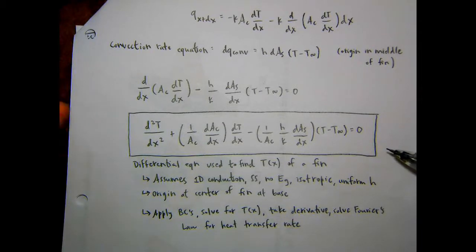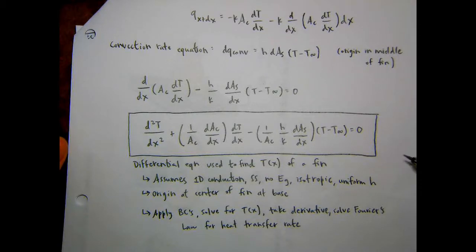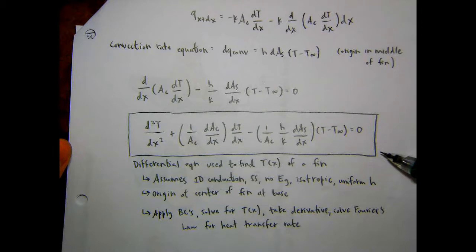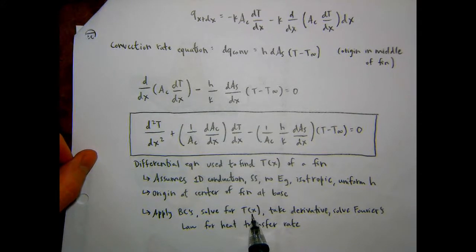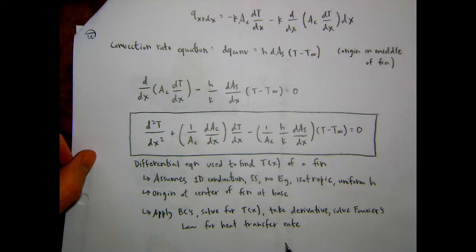This equation is for a fin. We concluded that we can use it to find a general temperature distribution, apply boundary conditions to find a specific solution, take the derivative, and then apply Fourier's law to get the heat transfer rate — just like we have before, but now for an extended surface.